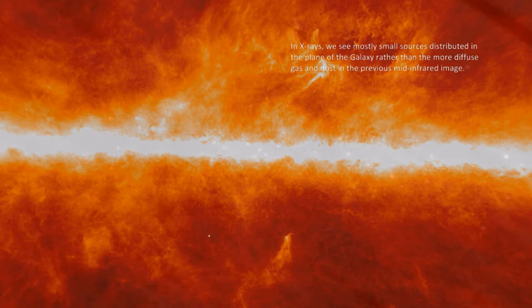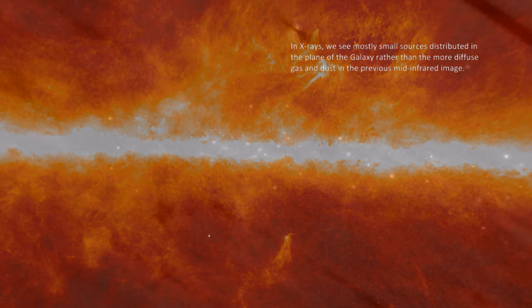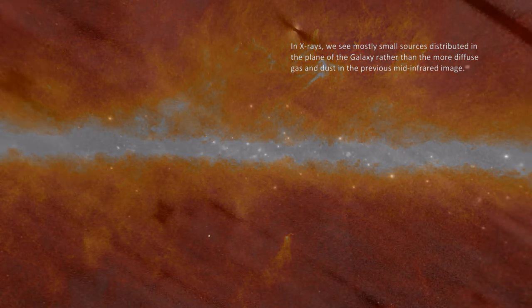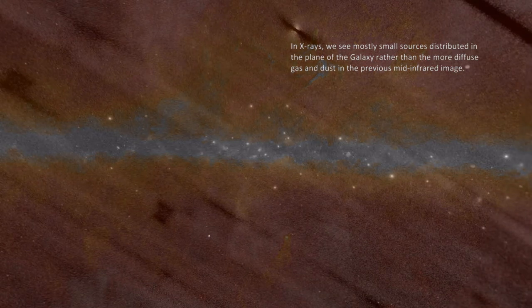In X-rays, we see mostly small sources distributed in the plane of the galaxy rather than the more diffuse gas and dust in the previous mid-infrared image.